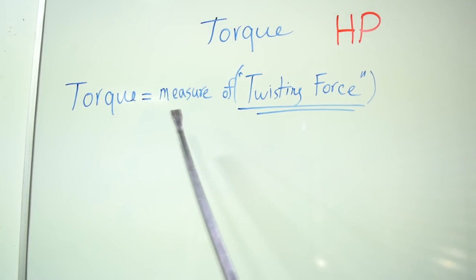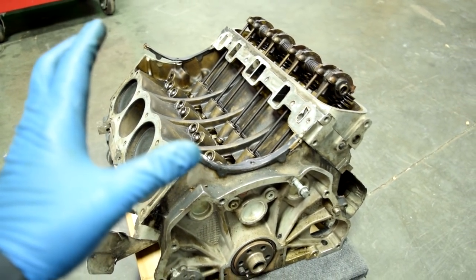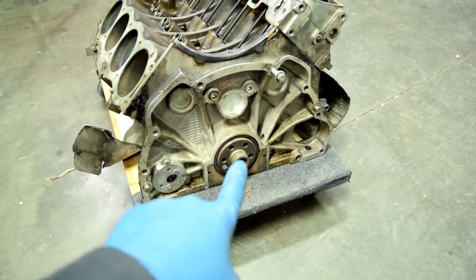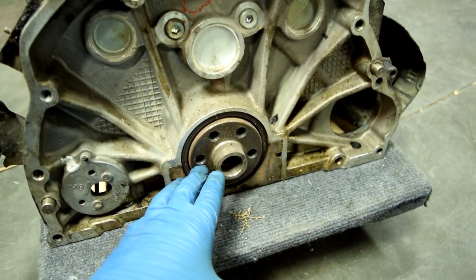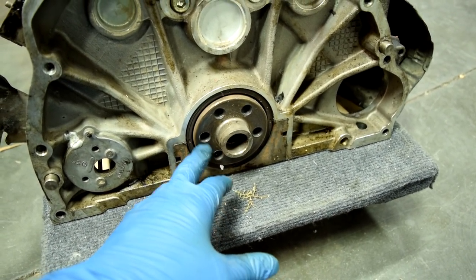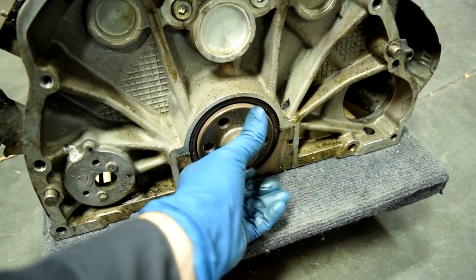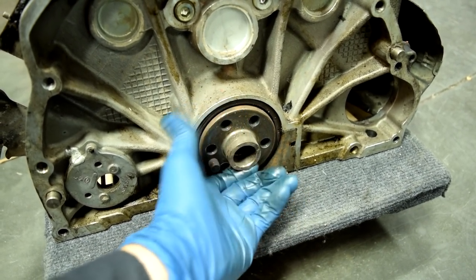All right so basically torque is the measure of twisting force. And we're talking about a car engine, we're talking about how much twisting force your crankshaft can put out. So here's the back of this engine and here's the back of our crankshaft where it attaches to our transmission. So basically we're talking about how much twisting force this crankshaft can produce as it's turning.